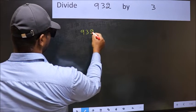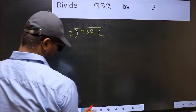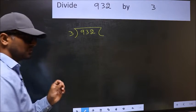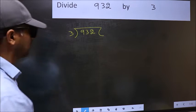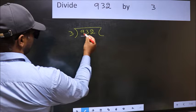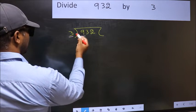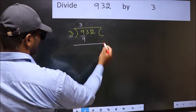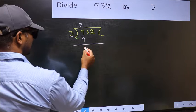9.32 and 3 here. This is your step 1. Next, here we have 9 and here 3. When do we get 9 in 3 table? 3 times 3 is 9. Now you should subtract. 9 minus 9, 0.